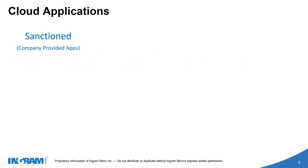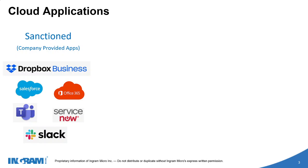If you take a look at cloud applications, there are a couple different types. The first are called sanctioned applications — these are applications that are typically provided to you by your company, such as Dropbox for Business, Salesforce, and Office 365, just to name a few. These are sanctioned by your IT department, so they have pretty good visibility into what's going on in these applications.